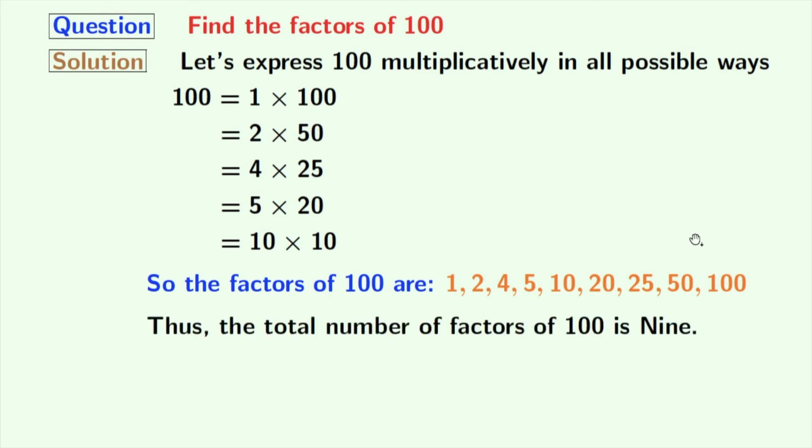So, the total number of factors of 100 is 9. Now, look at these factors.